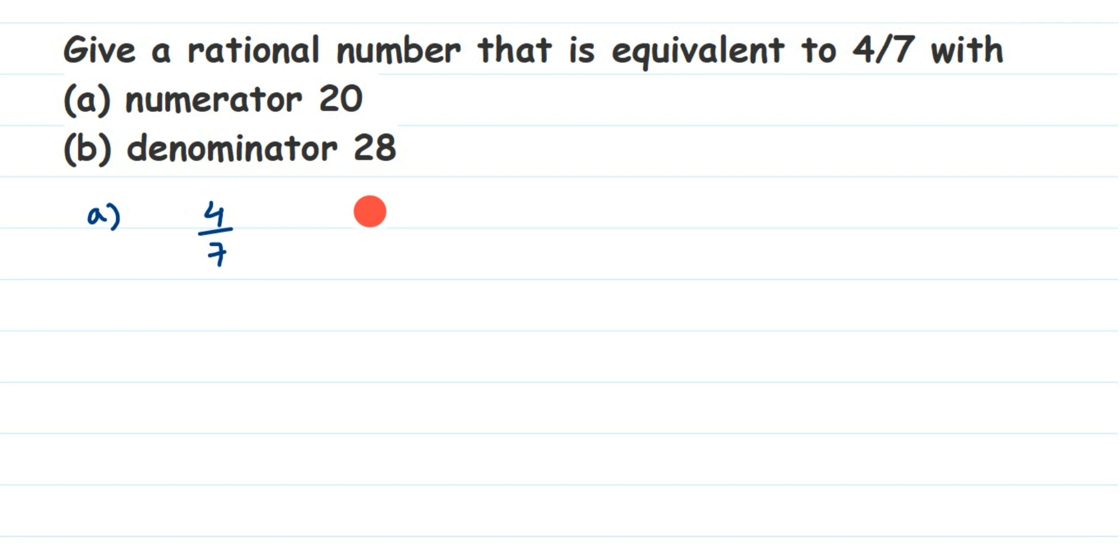Now the question here is: with 4, what should we multiply to get 20? So we have 4/7. With 4, what should we multiply to get 20 in the numerator? We want 20 in the numerator, right? That's the question. So the number will be 5. 4 times 5 is 20, so the same 5 I want to multiply in the denominator also.